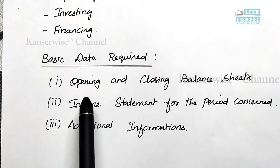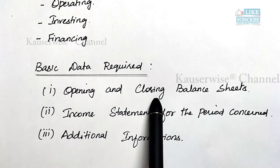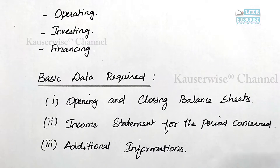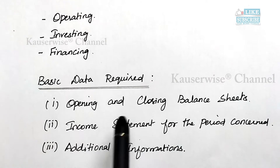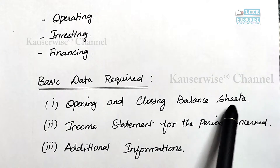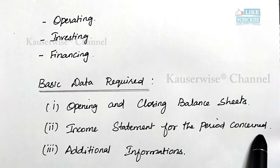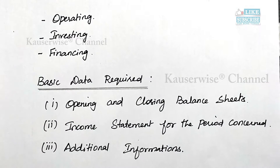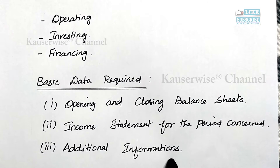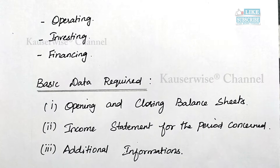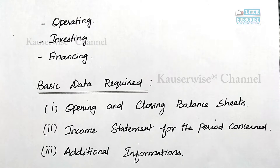Now let us see what are the basic data required to prepare cash flow statement as per accounting standard 3. The first one is opening and closing balance sheet. By comparing opening balance and closing balance, we can see if there are any changes in assets and liabilities. The second one is income statement, that is, profit and loss account for the period concerned. The third one is any additional information regarding inflow and outflow of cash.